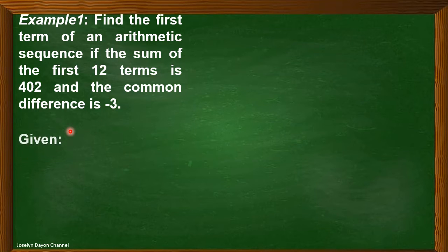So, of course, given our common difference, which is negative 3, s sub n, the sum of the first 12 terms, is 402.